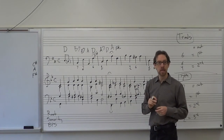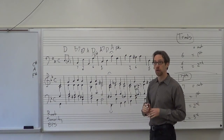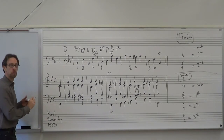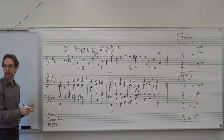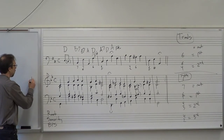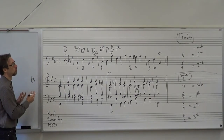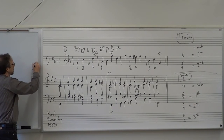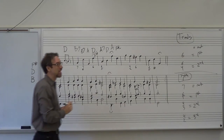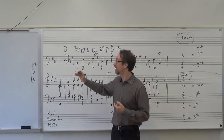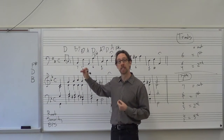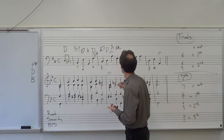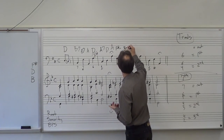Here I have a B with nothing underneath it, meaning root position triad. I don't say minor or major right away — I just know it's root position. I write the notes from the key signature: B, D, F sharp. I analyze: B to D is a minor third, B to F sharp is a perfect fifth. This must be a B minor triad.